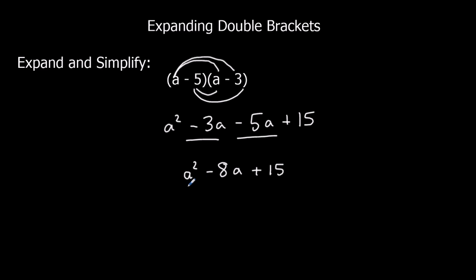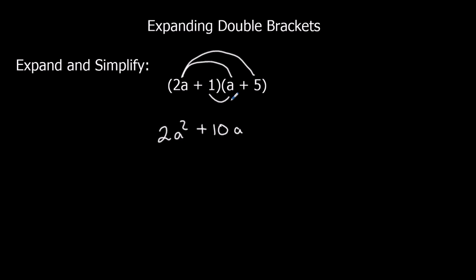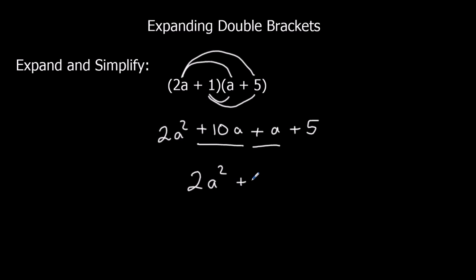So the final answer is a squared minus 8a plus 15. This time we've got a number in front of one of the a terms — same process. 2a times a is 2a squared. 2a times 5 is 10a. 1 times a is just a. And 1 times 5 is 5. Simplify: 10a plus 1a is 11a. So the final answer is 2a squared plus 11a plus 5.